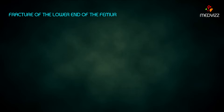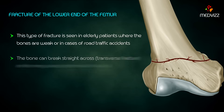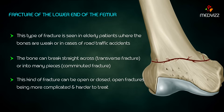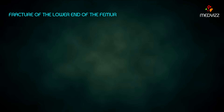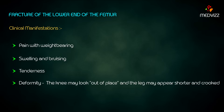Fracture of the lower end of the femur is seen in elderly patients with weak bones or in road traffic accidents. The bone can break straight across or into many pieces, and the fracture can be open or closed, with open fractures being more complicated and harder to treat. Clinical manifestations include pain with weight bearing, swelling and bruising, tenderness, and deformity; the knee may look out of place and the leg may appear shorter and crooked.